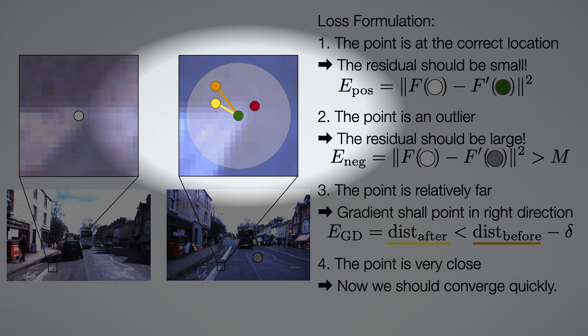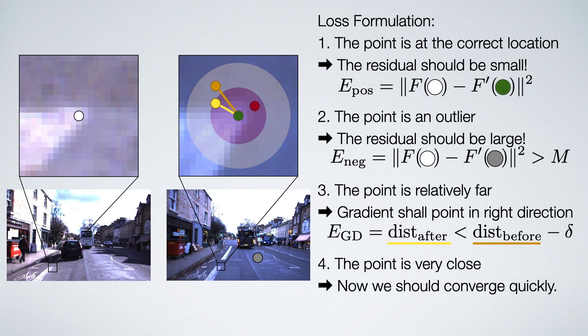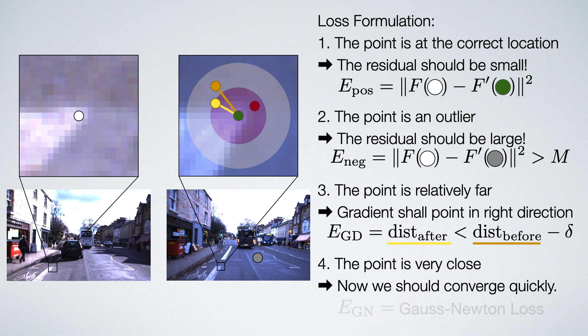For this, we sample a point in a small vicinity around the correct solution. Here we assume that the algorithm behaves like the Gauss-Newton method and we want to converge quickly with sub-pixel accuracy. To enforce this, we compute the Gauss-Newton loss,